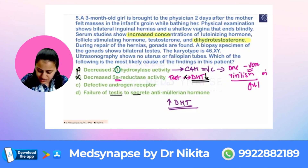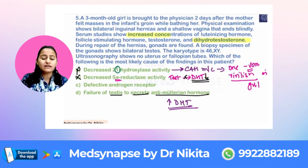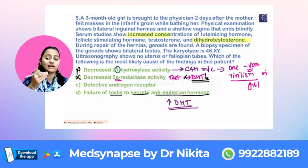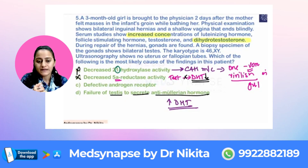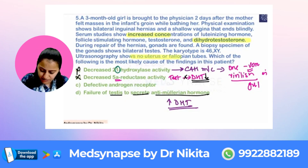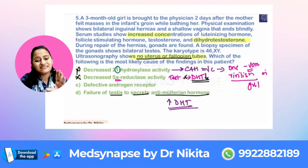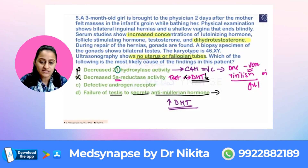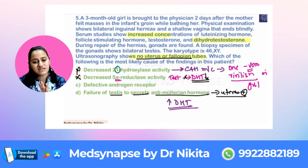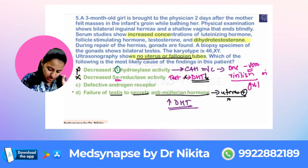Option: Failure of the testis to secrete anti-Müllerian hormone. The testis generally secretes anti-Müllerian hormone so that the female tract — the uterus — does not develop. Here, ultrasonography shows no uterus or fallopian tubes, meaning the anti-Müllerian hormone was present. If there had been failure, a small uterus would be present, which is not the case here. So this option is also out.